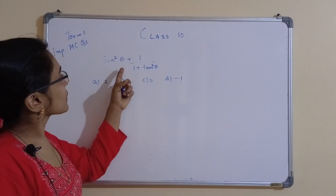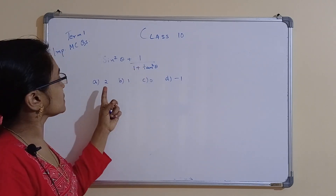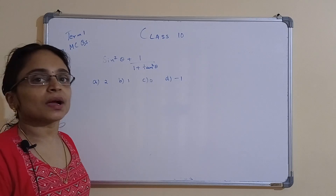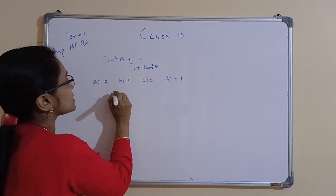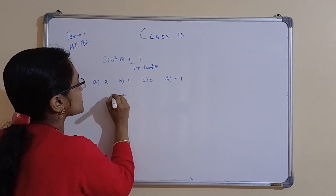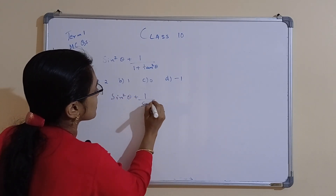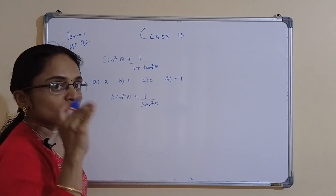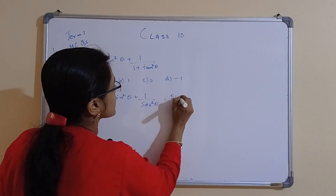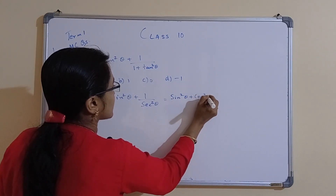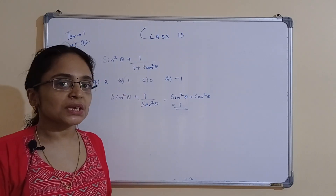This question is from trigonometry. Find the value of sin²θ + 1/(1 + tan²θ). Since 1 + tan²θ = sec²θ, the expression becomes sin²θ + 1/sec²θ = sin²θ + cos²θ = 1. So option B, the answer is 1, is correct.